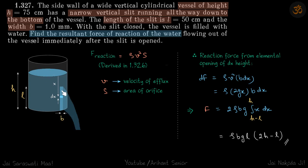So we have a cylinder which has a slit of length L, the column height is H, width of the slit is B. We need to find what is the resultant force of reaction of water on the cylinder.